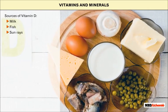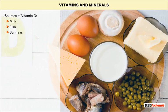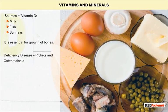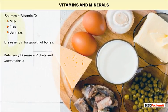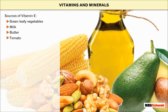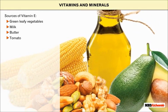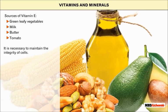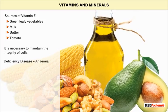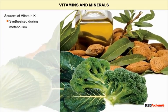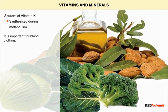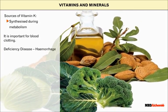Milk, fish and sun rays are good sources of vitamin D. It is essential for growth of bones. Deficiency of vitamin D causes rickets and osteomalacia. Green leafy vegetables, milk, butter, tomato, etc. are good sources of vitamin E. It is necessary to maintain the integrity of cells. Deficiency of vitamin E causes anemia. Vitamin K is synthesized during metabolism. It is important for blood clotting. Deficiency of vitamin K causes hemorrhage.